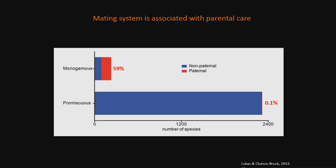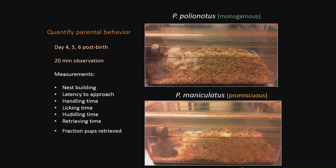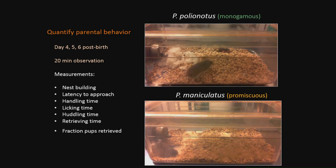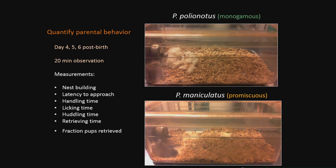To address that question, Andres designed a behavioral experiment. He paired males and females together, they mated, had litters, and at days four, five, and six post-birth he would separate the parents, put an individual parent in a new cage, let them acclimate for 30 minutes. They were given a nestlet to build a nest. Then after that acclimation period, he would introduce a pup from that parent's litter. Here you're looking at a dad of Peromyscus polionotus, the monogamous species — as the pup is introduced, he immediately runs over, handles that pup, licks it, starts to huddle him, and for the rest of the 20-minute observation period continues to provide care including handling, licking, huddling, and retrieving.